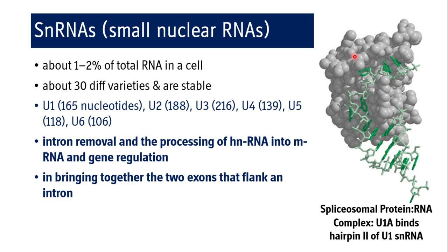Coming to small nuclear RNAs. These snRNAs are different from sRNA, where 's' means soluble — that soluble RNA is just tRNA. snRNA is small nuclear RNA. This variety of RNA constitutes about 1 to 2% of total RNAs in a cell, has about 30 different varieties and is quite stable in the system. They are U1, U2, U3, U4, U5, U6 and on.